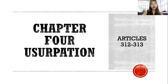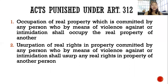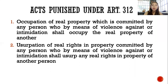Next is Chapter 4 or Usurpation, Articles 312 to 313. There are two acts punished under Article 312. First, occupation of real property, committed by any person who by means of violence against or intimidation shall occupy the real property of another. Second, usurpation of real rights in property, committed by any person who by means of violence against or intimidation shall usurp any real rights in the property of another person.